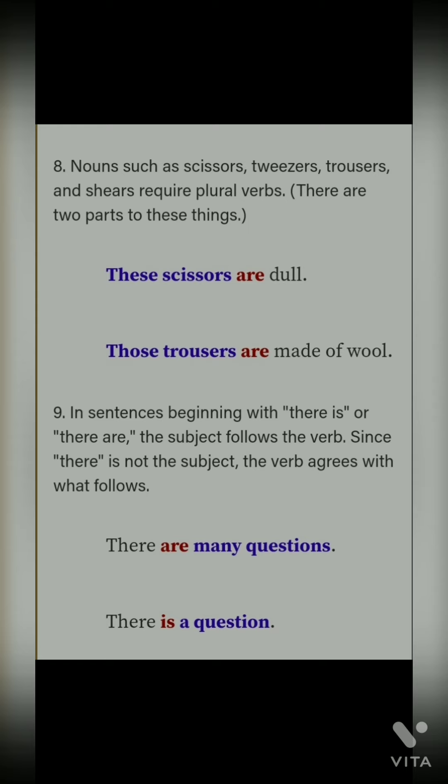Ninth point: in sentences beginning with 'there is' and 'there are', the subject follows the verb since 'there' is not the subject. The verb agrees with the subject only. For example: 'there are many questions' — zyada questions hain to 'are' aayega. Agar ek question hai to 'there is' aayega.